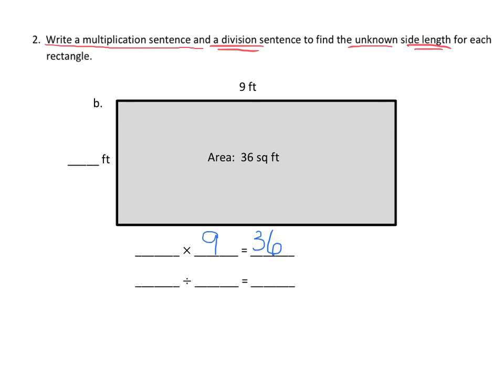Now, we don't know what the height or this side length is, but we know the other side length, and that when you multiply these, you get 36. So that means the missing value is 4.